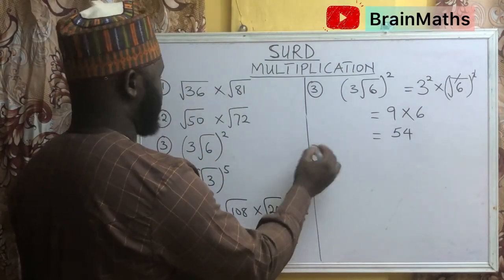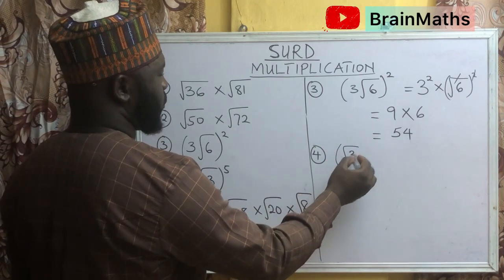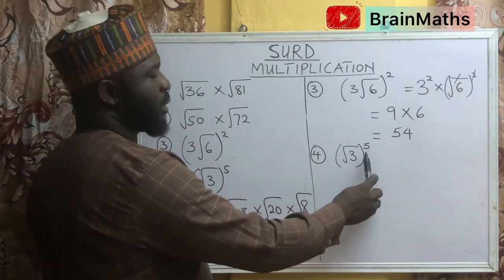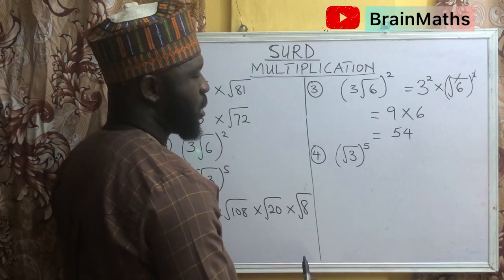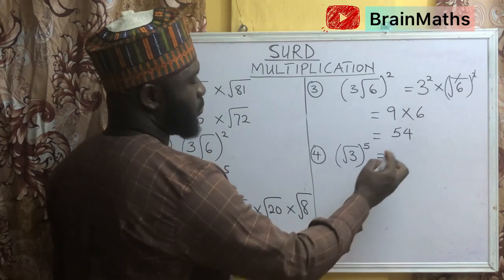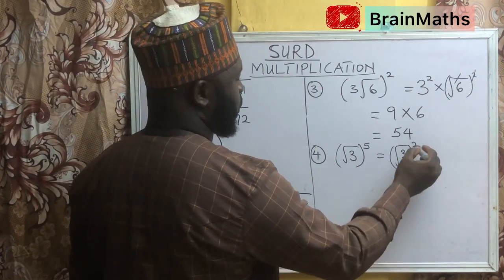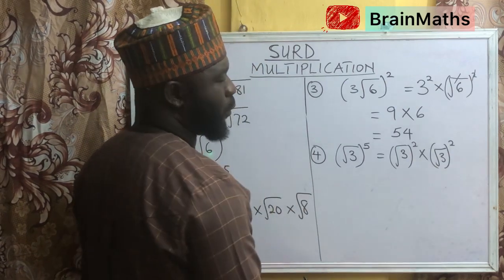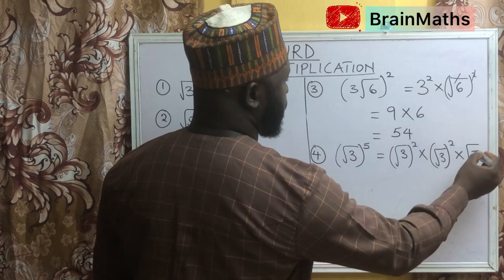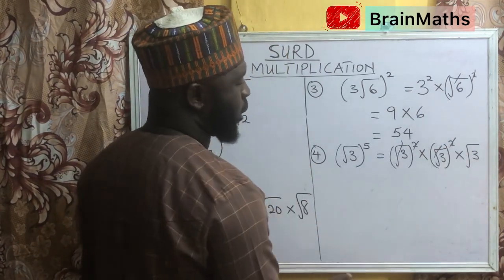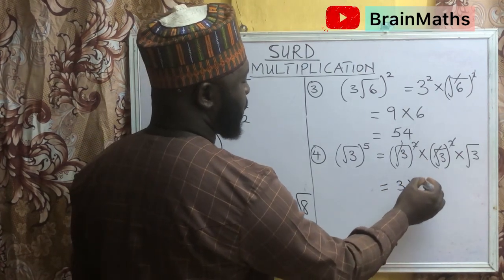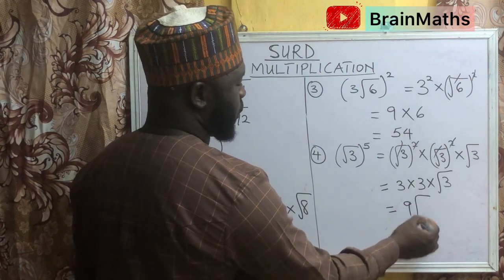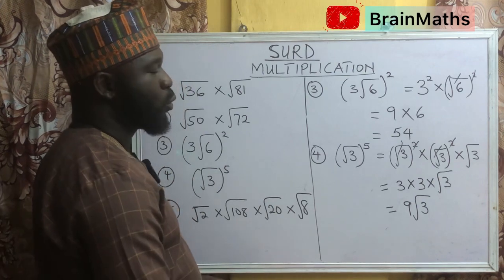Question number 4 says: root 3 raised to power 5. It is obvious that we cannot solve this at once, but we can break it into pieces by saying root 3 raised to power 2, times another root 3 raised to power 2. We have a power of 4 now, remaining 1, times 1 root 3. So these cancel out each other and we are going to be left with 3 times 3 times root 3. 3 times 3 equals 9 root 3, and that is our final answer for question number 4.